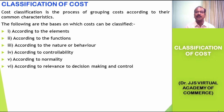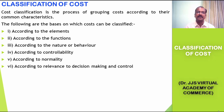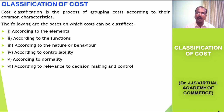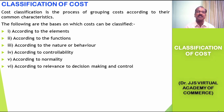There are a few bases on which cost can be classified. They are: according to the elements, according to the functions, according to the nature or behavior, according to controllability, according to normality, and according to the relevance to decision making and control. These are all the bases on which cost could be easily classified and understood by anyone.